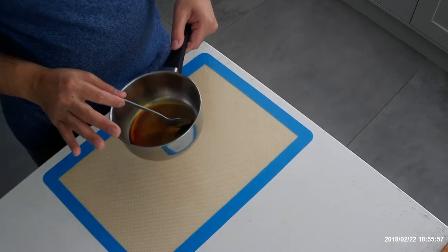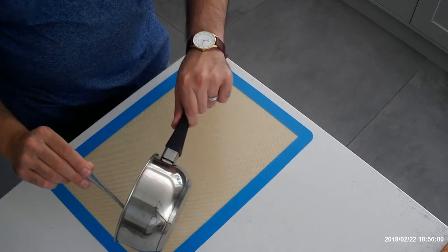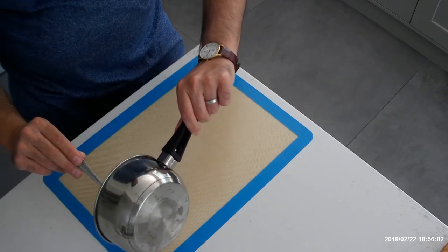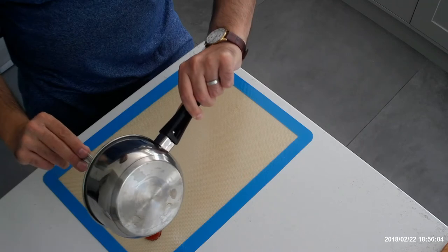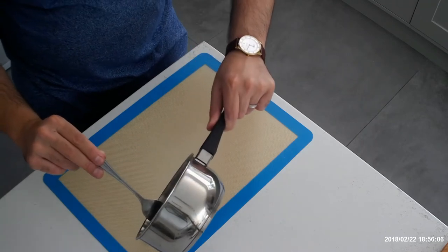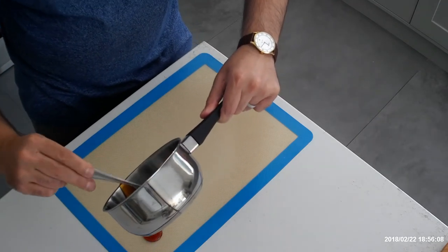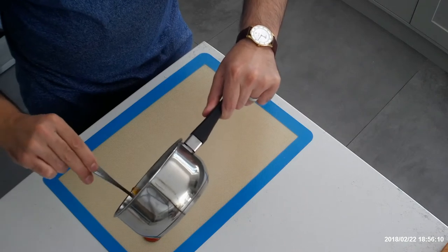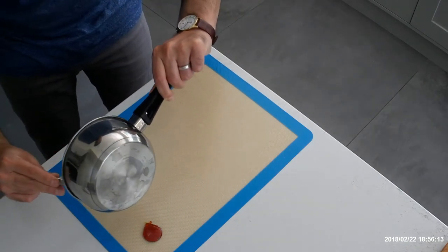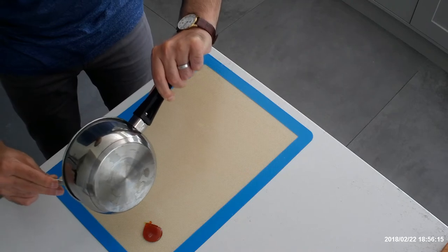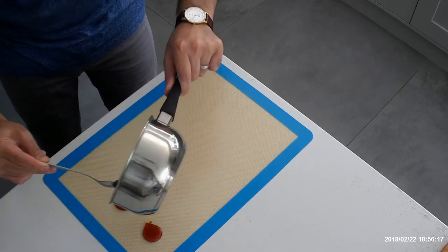Okay so we're here at the mat and I'm just going to pour out a little bit of this lovely caramelized sugar here. Got a little one there and I'm going to put some on the other side. You have to work very quickly because it starts to harden very quickly.